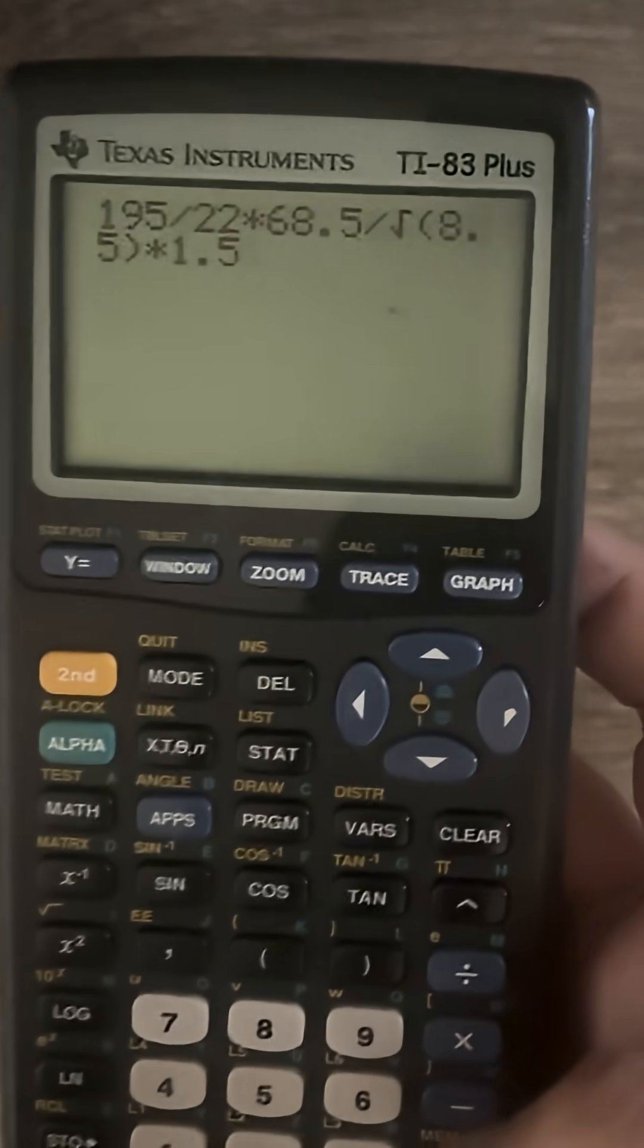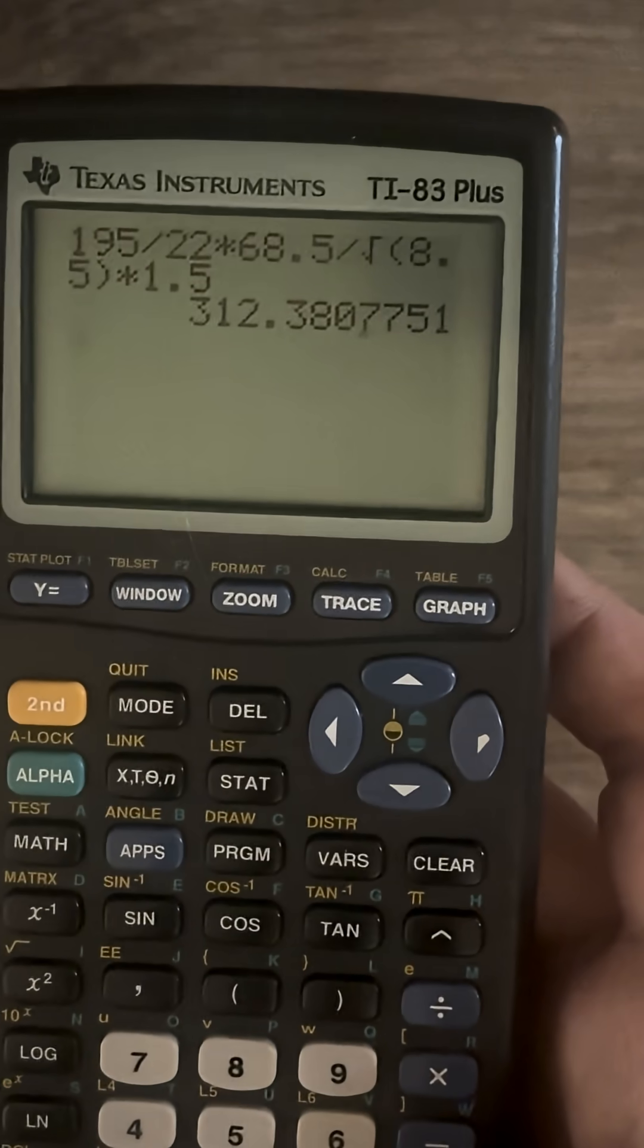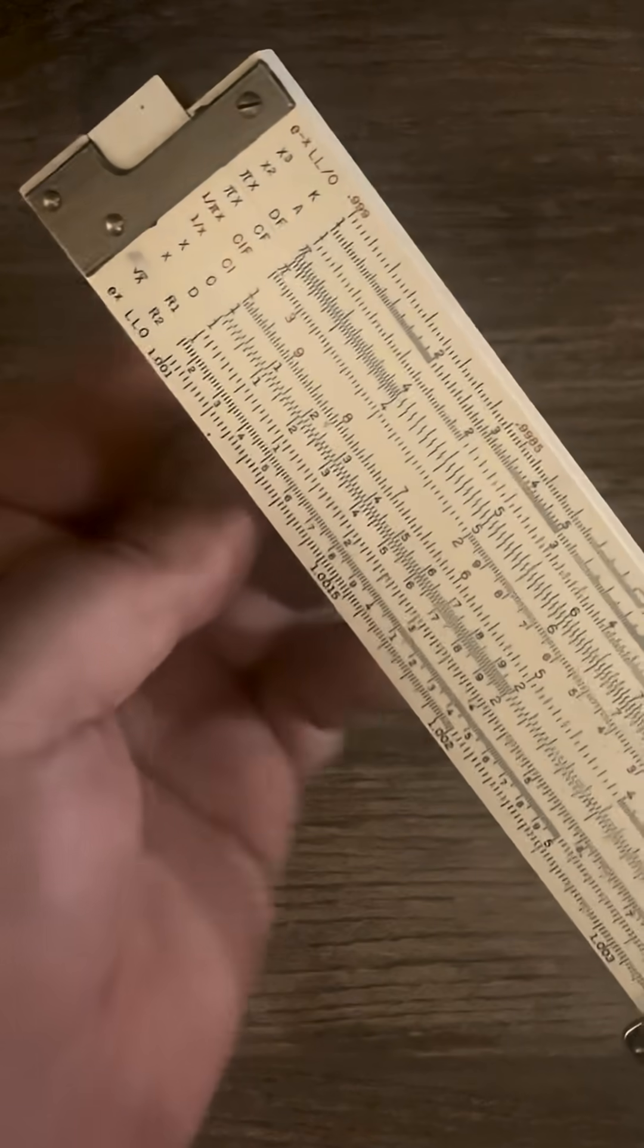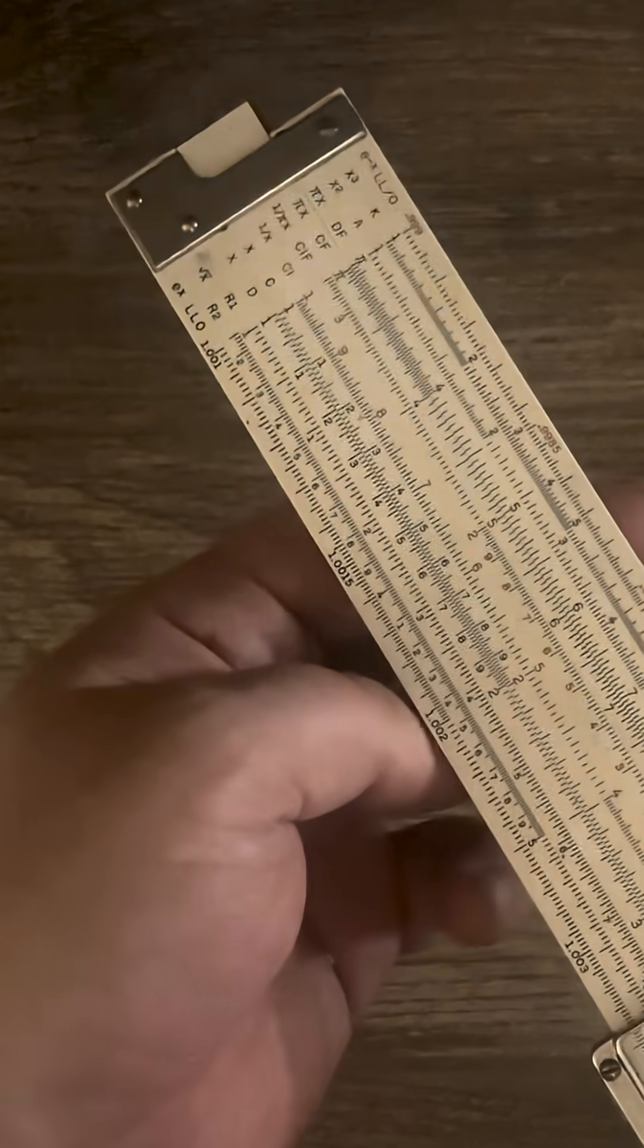So if we want to check that in our calculator, I'll hit enter. And 312 is our answer. Again, the slide rule is a little bit less accurate, but very cool that it's able to get that close.